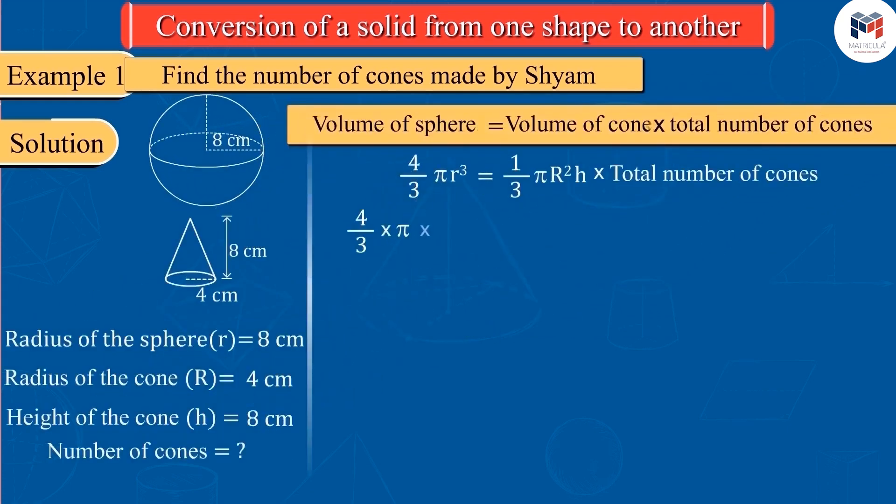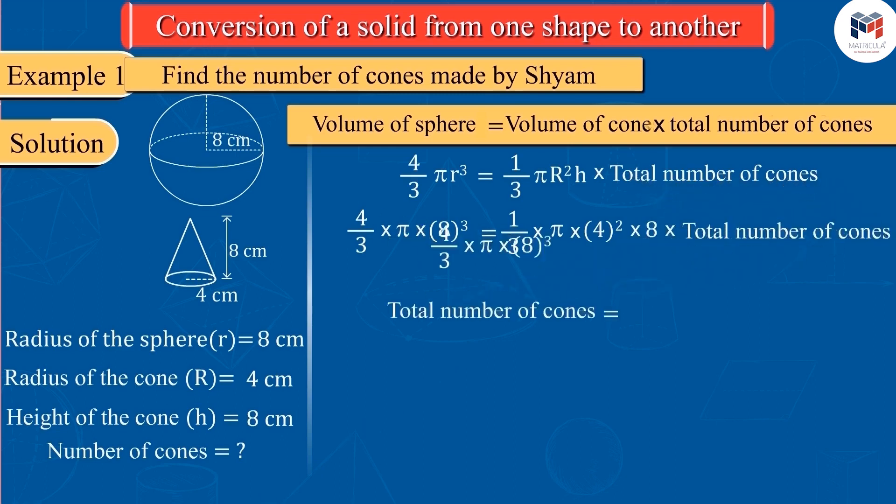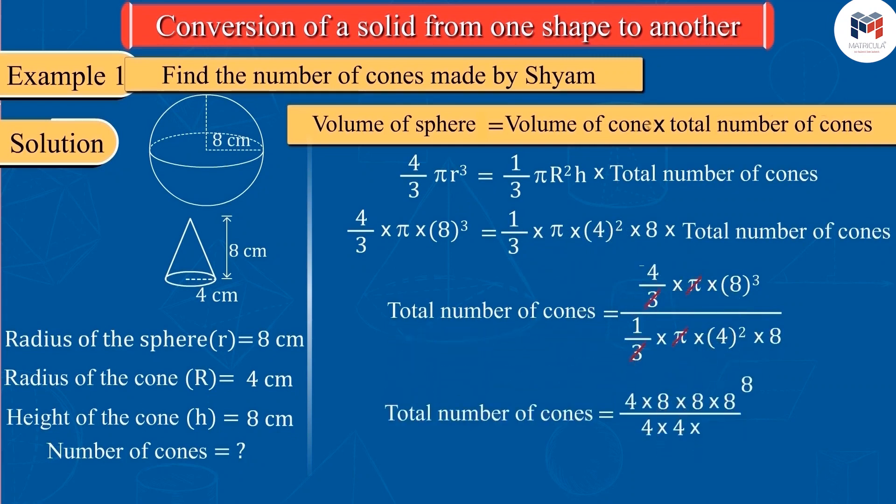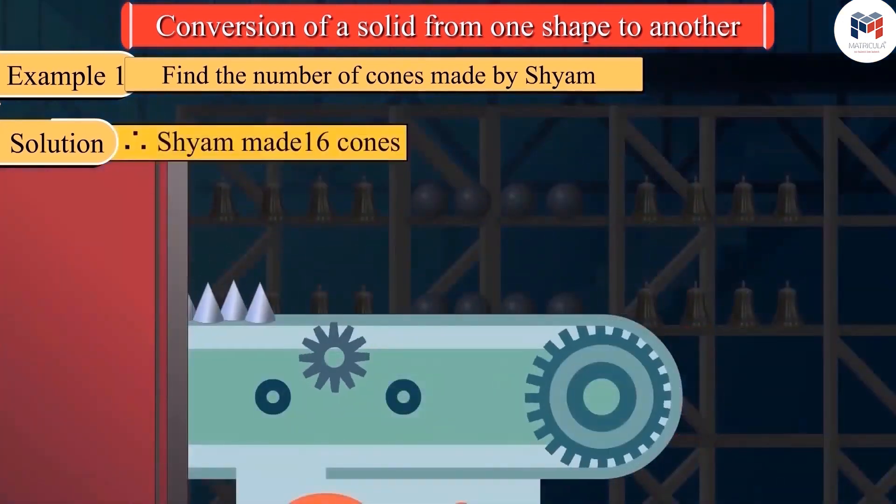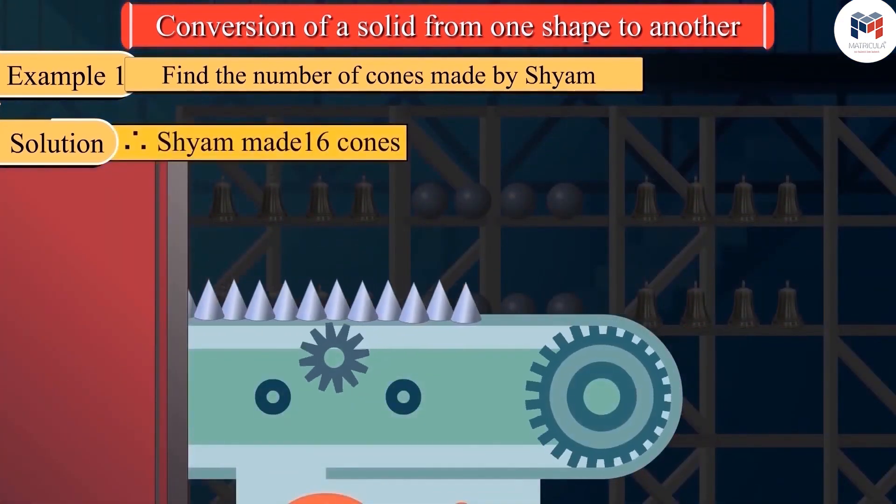Substituting all values, we get 16. So, Shyam makes 16 cones in this way.